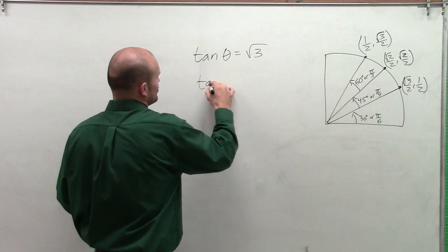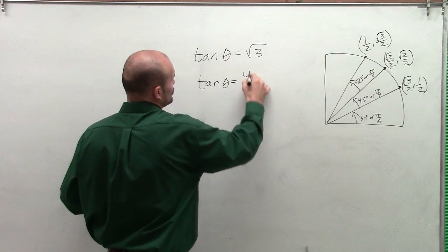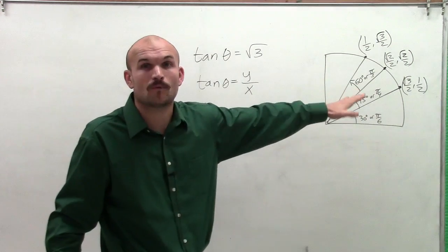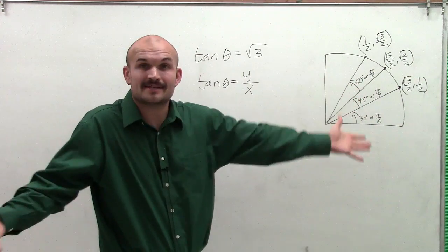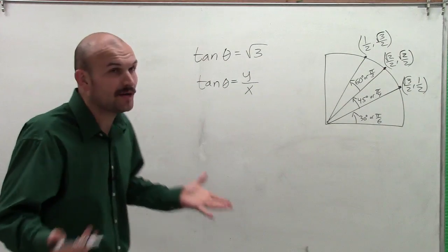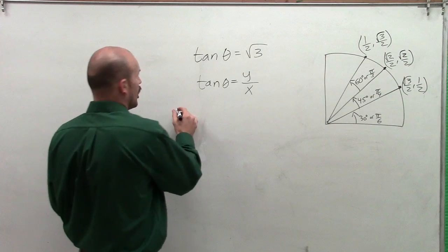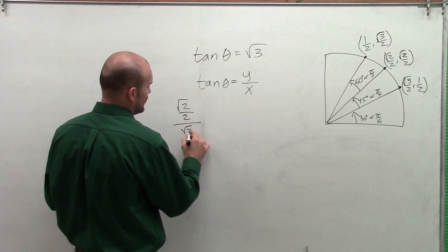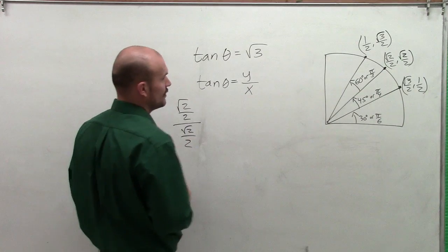So we look at this and we remember that tangent of any angle equals the y over the x coordinate. So that means I have to take the y over the x coordinate and divide them and see which one is going to give me the square root of 3. So there's only a couple possibilities, and I'm going to write all of them up here so you can see what we'll be working with.